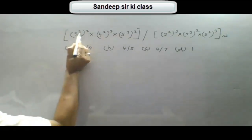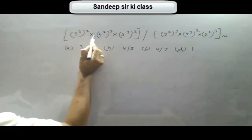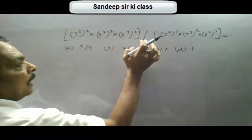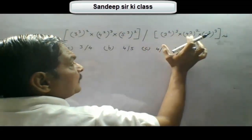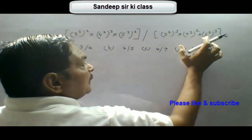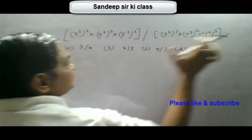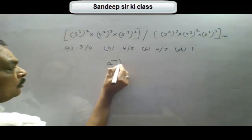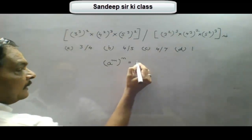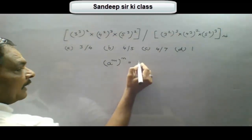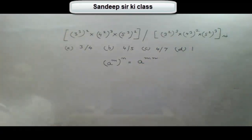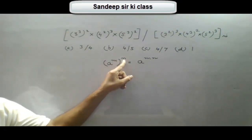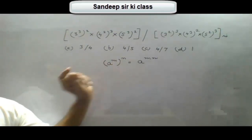Our next question is (3³)² × (4²)⁶ × (5³)² upon (3²)³ × (4³)² × (5²)³. Now here we note that if we have a to the power m, whole to the power n, then m and n are multiplied and we get a to the power mn. So the inner power and the outer power are multiplied in each case.